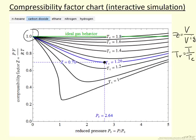In this simulation we show charts for 5 molecules. At lower temperatures, reduced temperature of 1 for example, there's significant deviation from ideal gas behavior.